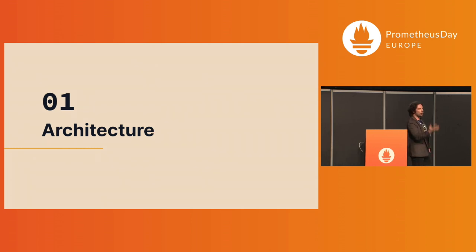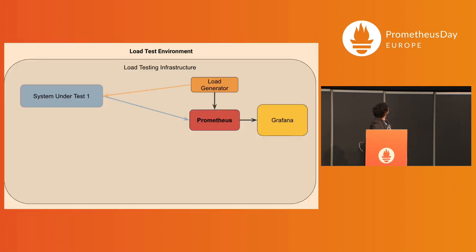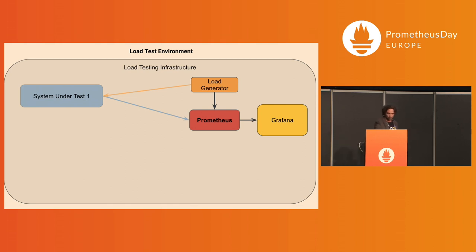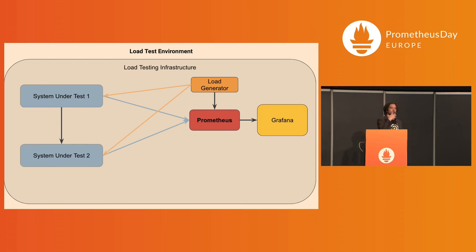How does the architecture I am proposing look like? You have your benchmarking setup where you are benchmarking a single system. You have a load generator that generates the load onto the system, and then you send the data back to Prometheus, which can then visualize it with Grafana. If you have multiple systems, then you just have either the same or different load generators apply a load onto your two systems, and they both send data to Prometheus.